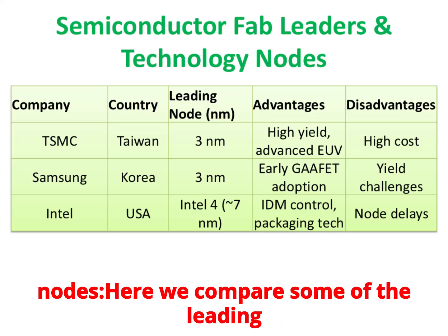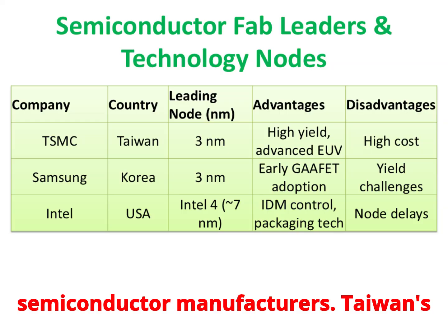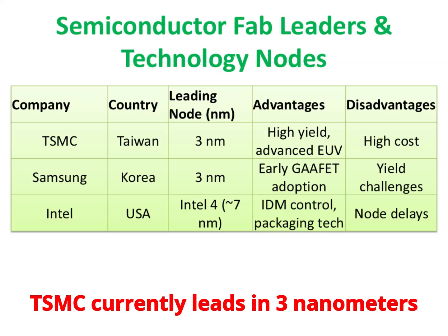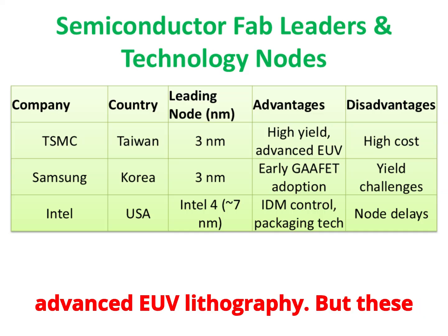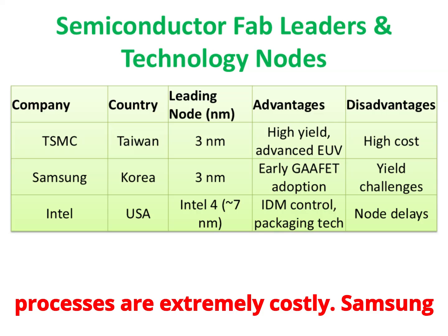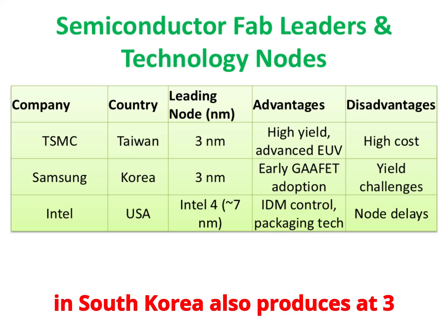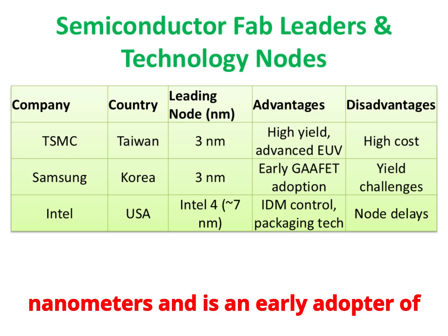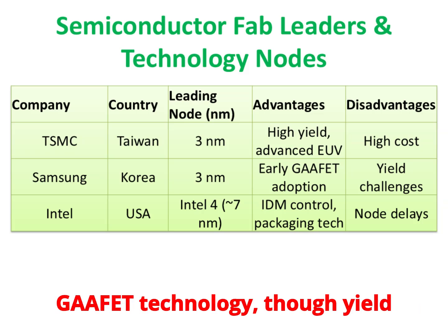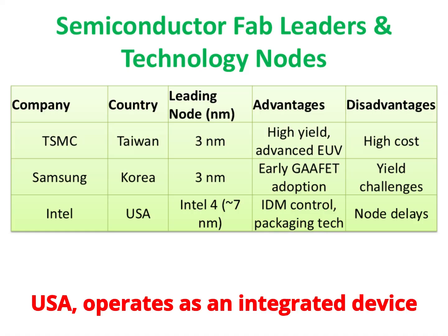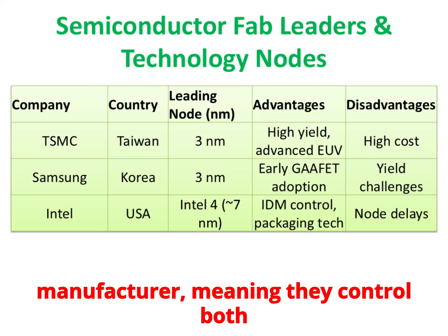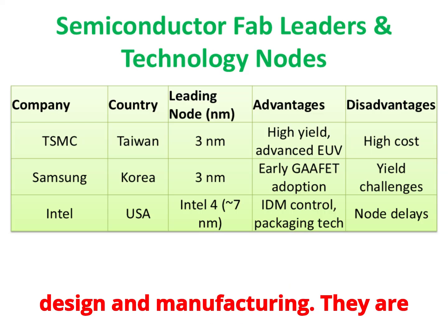Among leading semiconductor manufacturers, Taiwan's TSMC currently leads in 3-nanometer manufacturing with very high yields and advanced EUV lithography, though these processes are extremely costly. Samsung in South Korea also produces at 3 nanometers and is an early adopter of GAA FET technology, though yield challenges remain.